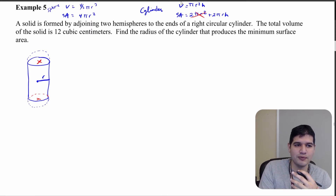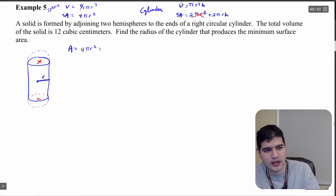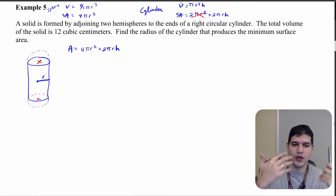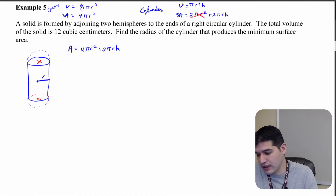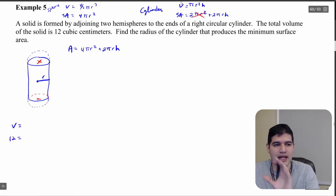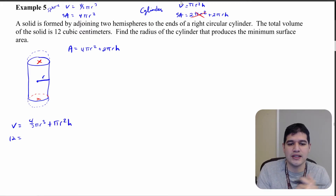We want the minimum surface area, so I need to combine the surface area formulas. Area equals the surface area of the sphere, 4πr², plus the lateral surface area of the cylinder, 2πrh. I notice I have both r and h, so I need an additional equation to relate them — that's where the volume constraint comes in. Volume equals 12, so (4/3)πr³ + πr²h = 12.